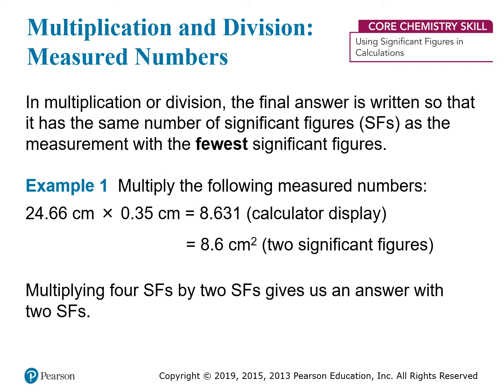Now we get to the real reason for all this rounding. As I mentioned, when we use measured numbers in calculations, we often need to round the answer to the correct number of significant figures. The first rule is for multiplication and division: when you multiply or divide measured numbers, your answer should only have as many significant figures as the measurement with the fewest significant figures. In this example, 24.66 has 4 significant figures, but 0.35 has only 2 significant figures, so the final answer must only have 2 significant figures. Remember that your calculator doesn't understand this, so it's up to you to take the number it gives you and round it to only 2 digits. In this case, the 3 here is less than 5, so you can round down by dropping the digits you don't need.